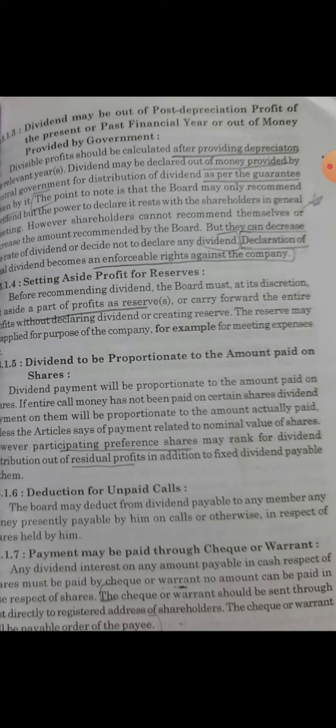Next: payment may be made through cheque and warrant. Dividend payment is always made in cash form — not in the form of goods. Dividend payment is made through cheque and warrant, which is sent by registered post to the registered shareholder's address.